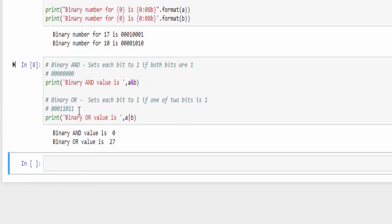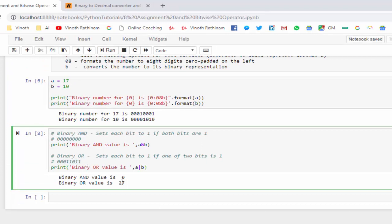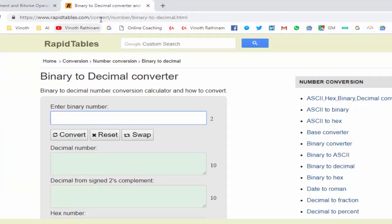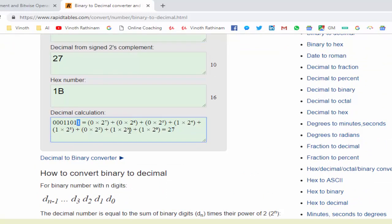The binary number of this one is equivalent to 27. We will confirm whether this output is correct or not. Just copy, and we have a readily available website which I will mention in the video description. Just paste it here and click on convert. So the equivalent decimal number is 27. If you want to learn this concept, you can scroll down how the conversion happens: 1 into 2 power 0, then 1 into 2 power 1, 0 into 2 power 2, 1 into 2 power 3. When you do the summation, you will get the output 27.